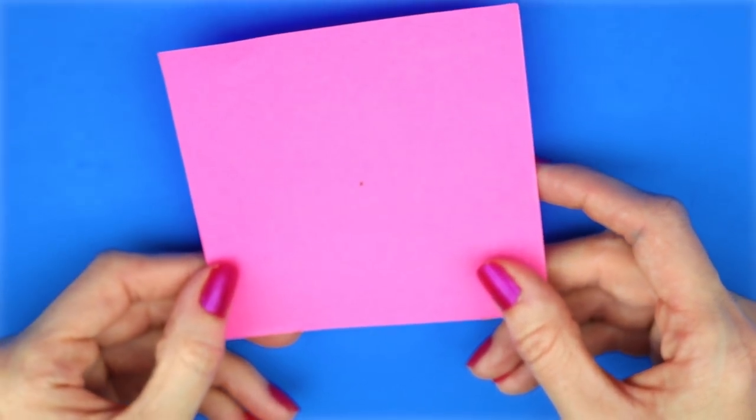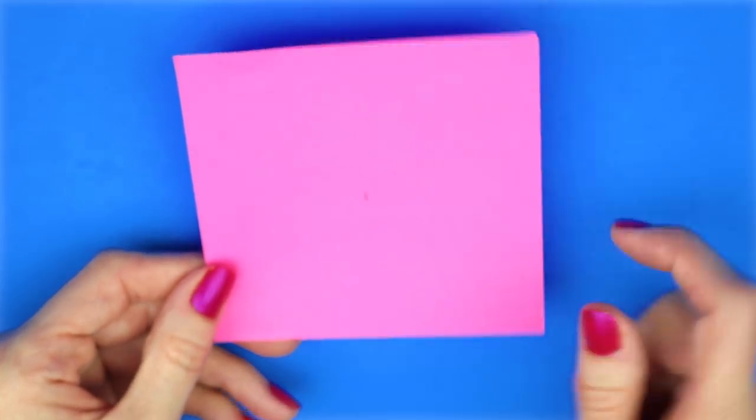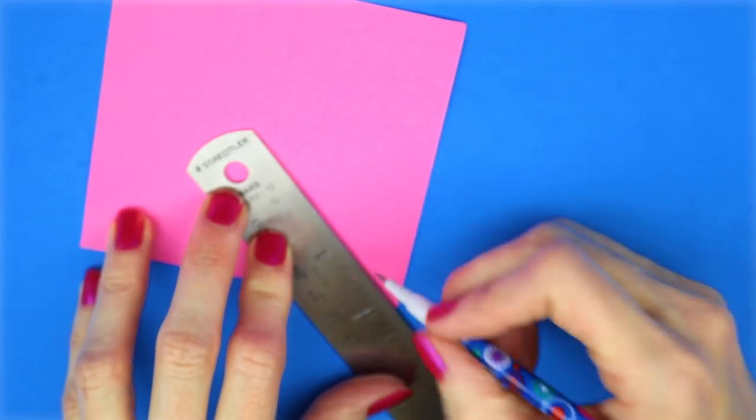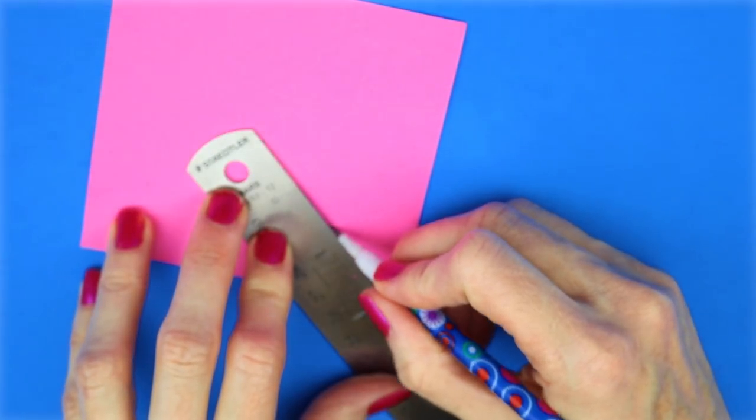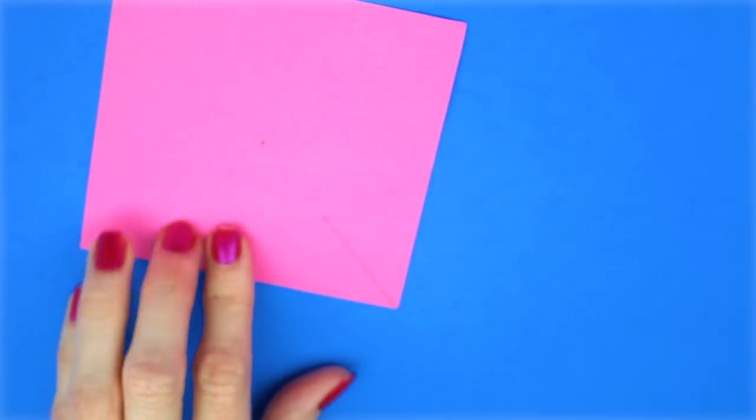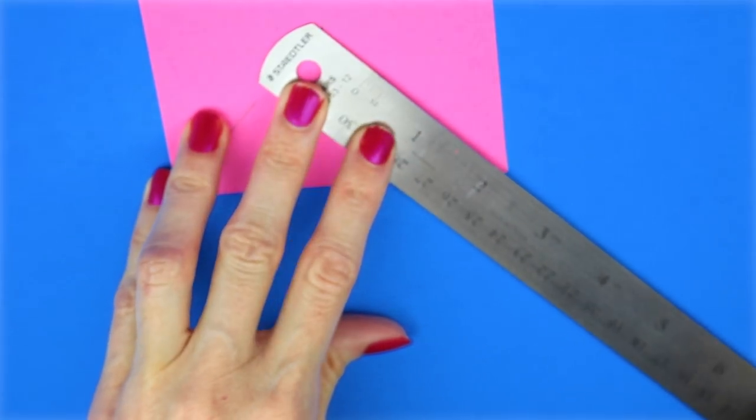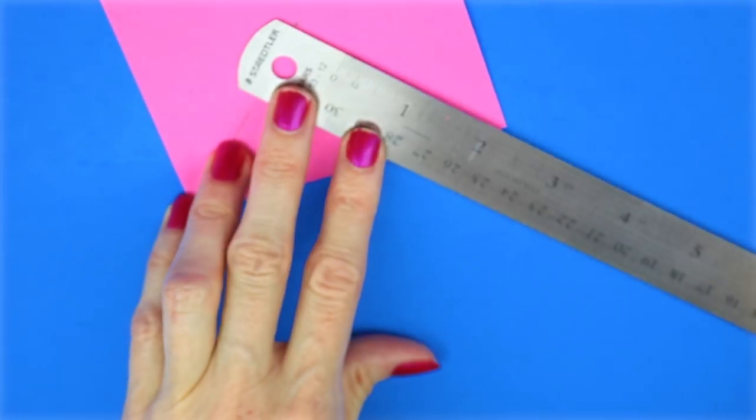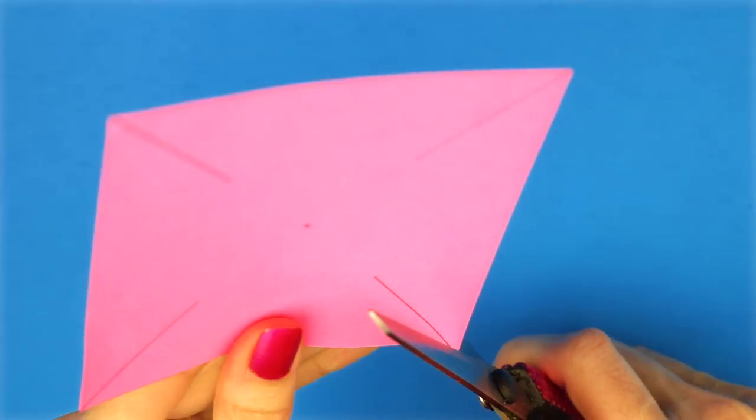I placed a mark in the center of the square. I made one and a half inch lines from the corner to the center point. Next, I cut on each of those lines.